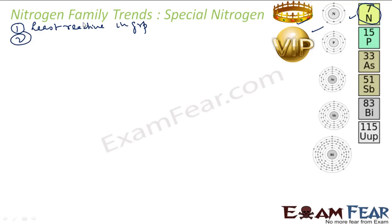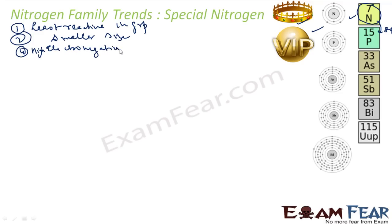Now, let's talk about the size — Nitrogen has very small size. We have seen that from Nitrogen to Phosphorus, there is almost 80% increase in size. Since the size is small, it has very high electronegativity and also very high ionization enthalpy.